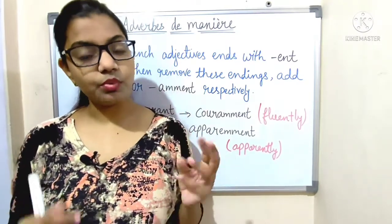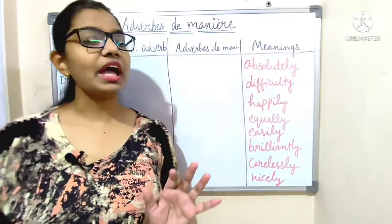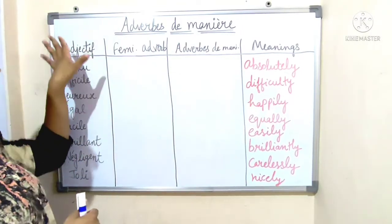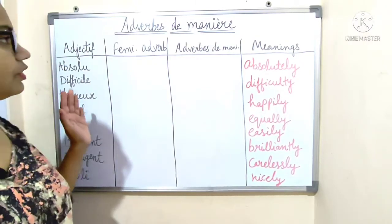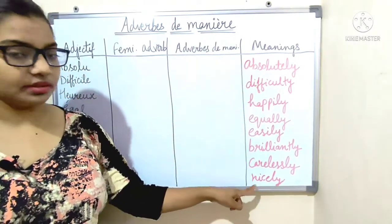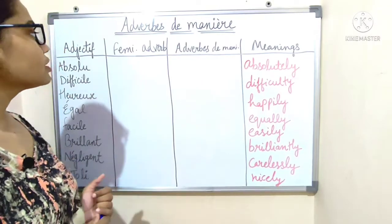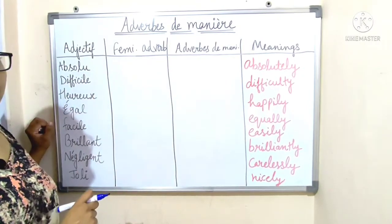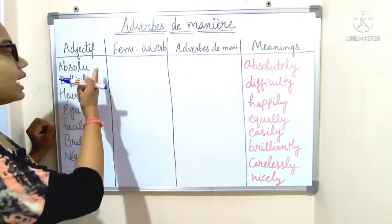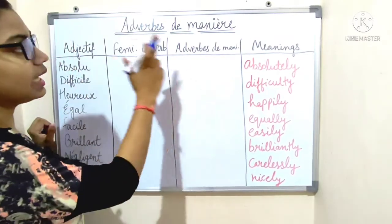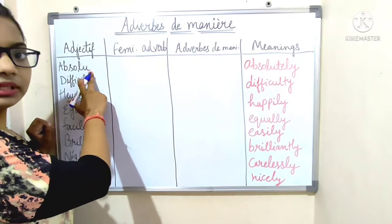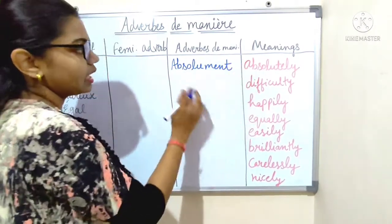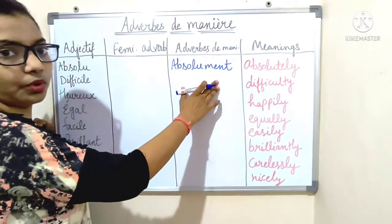Now we have a table to understand how these forms are made. First: 'absolu' — A-B-S-O-L-U. It ends with the vowel U, so we directly add '-ment': A-B-S-O-L-U-M-E-N-T — 'absolument', which means 'absolutely'.